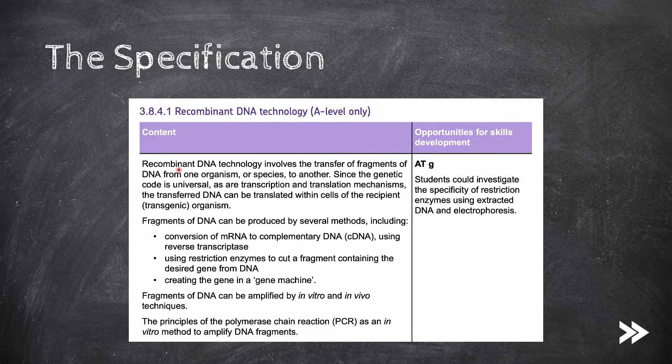We should know that recombinant DNA technology involves the transfer of fragments of DNA from one organism or species to another. Since the genetic code is universal, as are transcription and translation mechanisms, the transferred DNA can be translated within cells of the recipient transgenic organism. We need to know the different ways in which DNA fragments can be produced, as well as how fragments of DNA can be amplified by in vitro and in vivo techniques. We should know the principles of the polymerase chain reaction, also known as PCR, and how it amplifies DNA fragments in vitro.